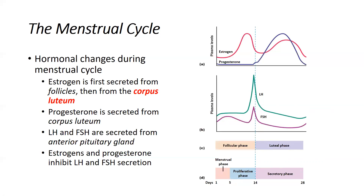Let's review the hormonal changes during the menstrual cycle. Estrogen is secreted from the follicle as it begins to develop. When the follicle ruptures, the corpus luteum takes over estrogen production. The corpus luteum continues to secrete progesterone as well. LH and FSH come from the anterior pituitary and influence the follicle. Estrogen and progesterone feed back to inhibit anterior pituitary production of LH and FSH — that's a negative feedback loop.